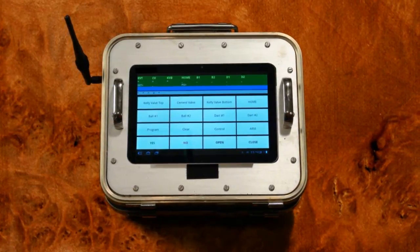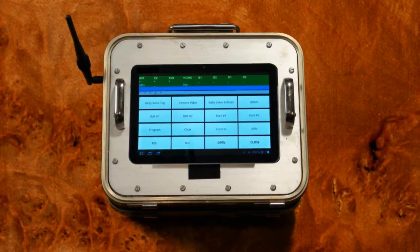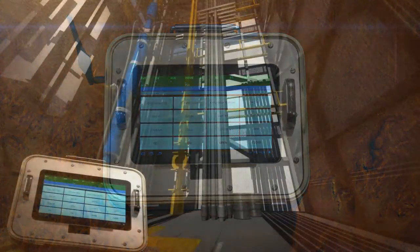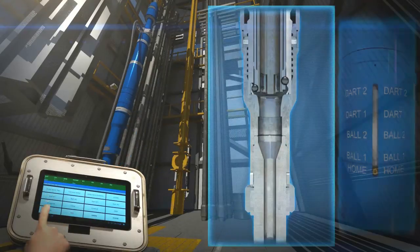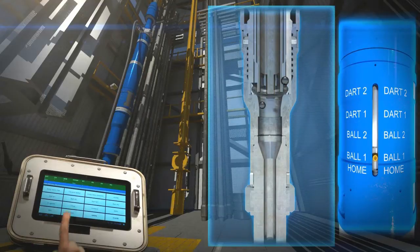The wireless top-drive cement head has the ability to drop two balls and two plugs. The operator enters the appropriate sequence into the wireless control for each ball and an internal sleeve in the cementing head moves upward, releasing the ball. Notice the sleeve indicator also move upward as each ball is dropped.